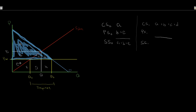On the producer side, they only produce the domestic quantity supplied at the world price. Above their willingness to accept, out to the quantity they produce, below the price they accept — producers are hit. They're contracting. Their producer surplus falls to just E. So producer surplus after trade is E.